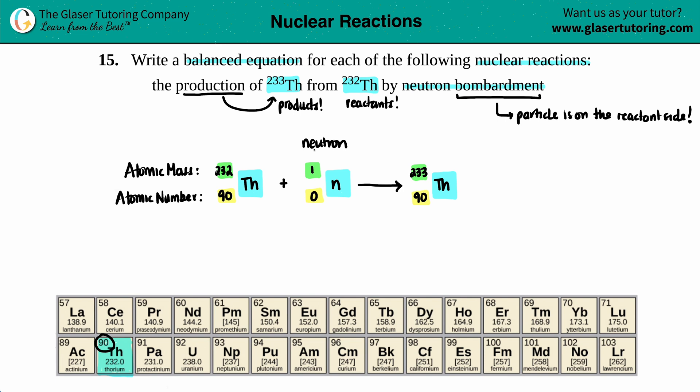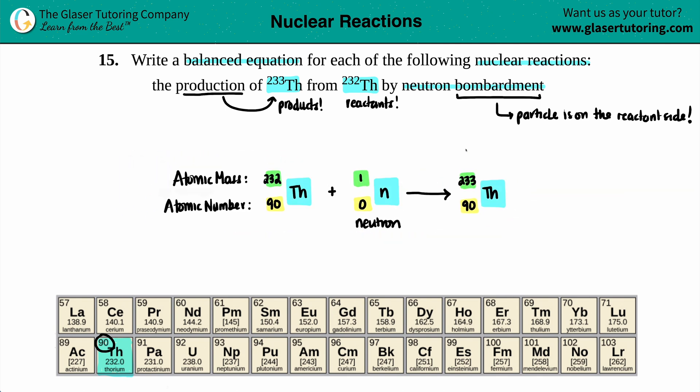Now when you are balancing these, just make sure that the top guys on the left equal the top guys on the right, and make sure that the bottoms equal each other out as well. Because if they don't, you might need to add a secret extra particle to balance it out.